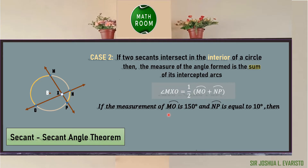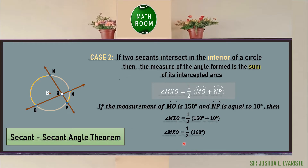For example, if the measurement of arc MO is 150 degrees and arc NP is 10 degrees, we find angle MXO by substitution: angle MXO = one-half of (150° + 10°) = one-half of 160° = 80 degrees. Therefore, angle MXO is equal to 80 degrees.